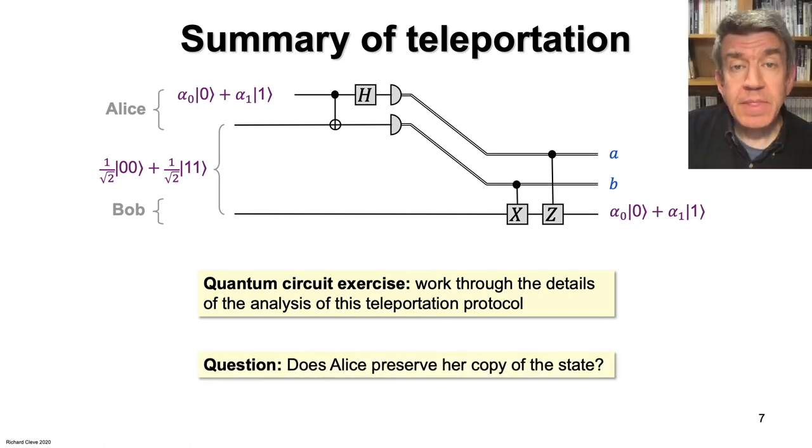Here's a question. Does Alice preserve her copy of the state? You may pause to think about this. Okay, since Alice measures her qubits, all the quantum information in her possession is lost. So, although Bob ends up with a copy of the state, Alice loses her copy of the state in the teleportation process.